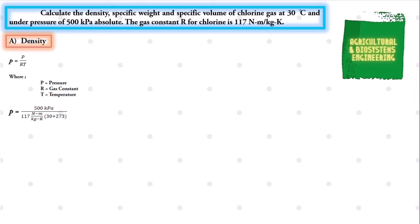We need to convert our temperature from Celsius to Kelvin by adding 273, and also convert the unit kilopascal to newton per square meter. We use the conversion factor: 1 kilopascal equals 1000 newton per square meter.